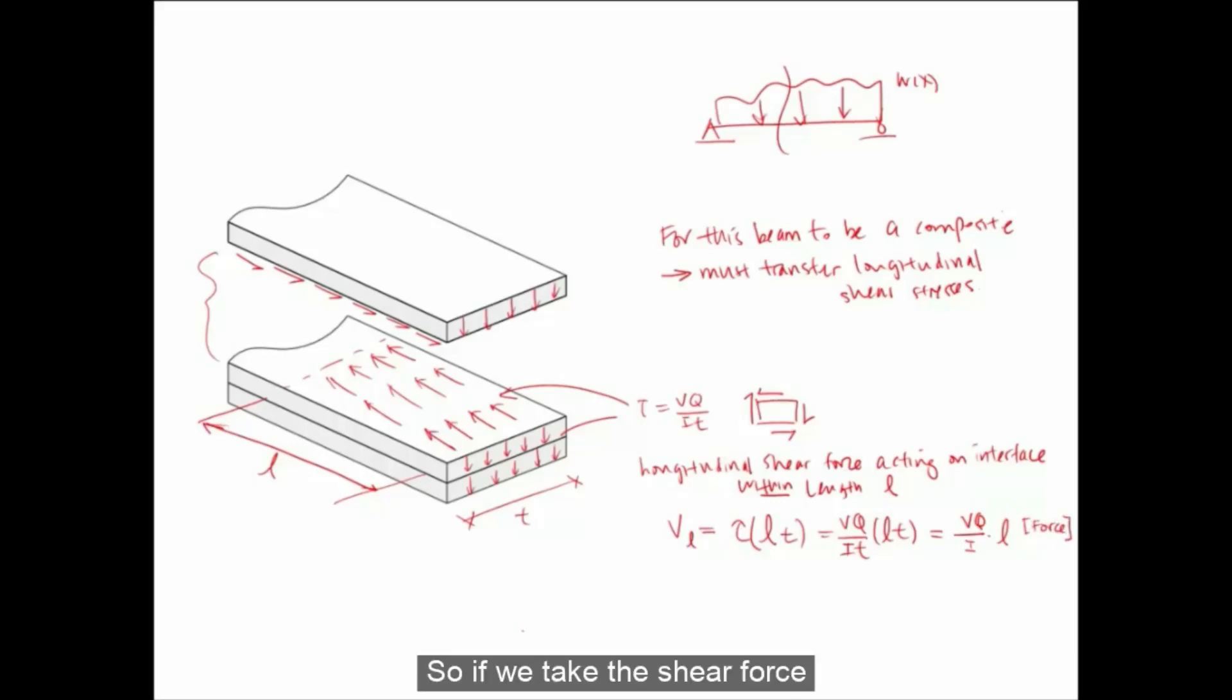So if we take this shear force and present it as a shear force per unit length, we can write VL over L, which simplifies to VQ over I, and we can call that Q, which is shear flow. And shear flow is in units of force per length.